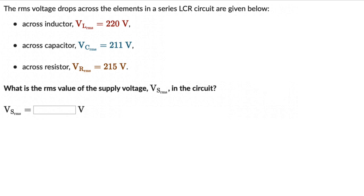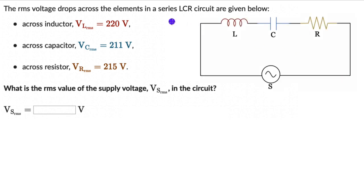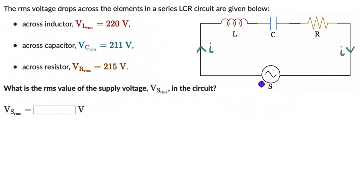Now where do we begin to think for this one? We have a series LCR circuit and there will be a current flowing in the circuit — this will also be an alternating current. We are asked to figure out the RMS value for the supply voltage. From what we know about series circuits, the source voltage is always equal to the resultant, or the sum, of the voltages across all of the components in that circuit.